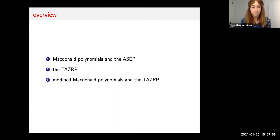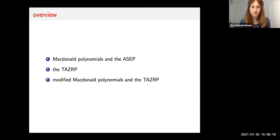I'll start by describing a well-known connection between Macdonald theory and statistical mechanics through the particle process called the ASEP, or asymmetric simple exclusion process. Then I will define the zero range process or TASEP, which is the new model I'll be talking about, and finally I'll talk about the combinatorial object that describes the link between those two.